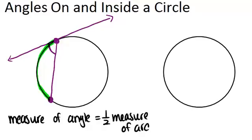So for example, if the arc was 100 degrees, then that angle would have to be 50 degrees. It's sort of like an inscribed angle, if you want to think about it like that.